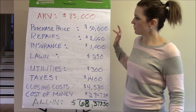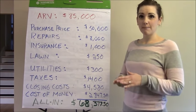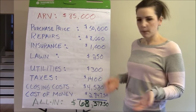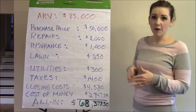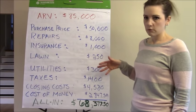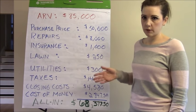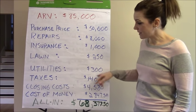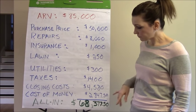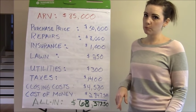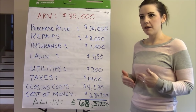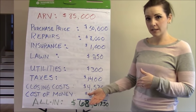You have to factor in your repairs, insurance, and cost to maintain the lawn. These are numbers people often forget. You have to mow the lawn and pay utilities while the house is vacant, or you'll get fined by the borough. The lawn cost about $250, utilities were about $300 for the holding period, and taxes for the time we held the property were about $1,400. Our closing costs were about $4,580. This is also the cost of our private money — a lot of people forget to factor in the interest you're paying to use that money.